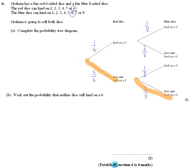So all I've got to do is work out the probability of not six followed by not six. That's the first probability, five out of six, multiplied by the second probability, seven out of eight.